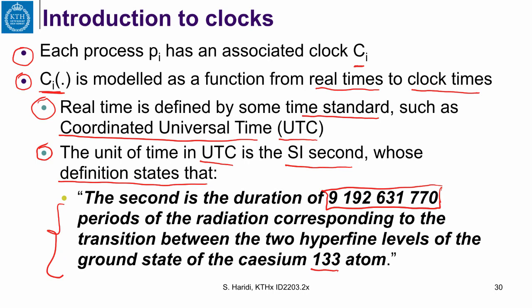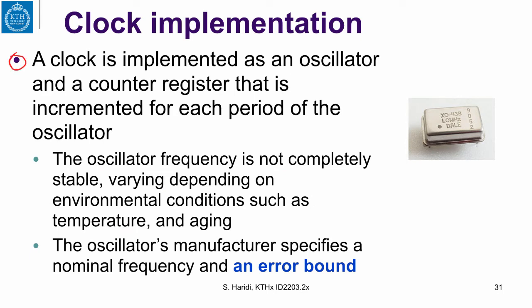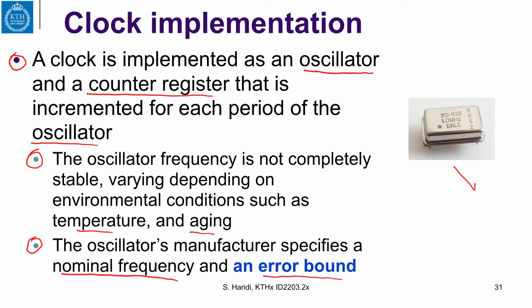Let's see how clocks are implemented. A clock is implemented by an oscillator and a counter register. The oscillator has a period and moves from one period to the next, and the counter register is incremented for each period of the oscillator. However, the oscillator frequency is not completely stable — it can vary depending on environmental conditions such as temperature and aging. Oscillator manufacturers specify a nominal frequency and an error bound that the rate should not exceed.